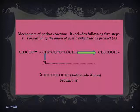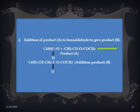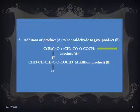In step 1, acetic anhydride forms an anion — the carbanion of acetic anhydride — which is the major product of this step and is called product A. In step 2, product A undergoes addition to benzaldehyde to give product B: C₆H₅CHO plus CH₂COO·COCH₃ (product A) gives C₆H₅CH⁻CH₂COOCOCH₃ (product B).